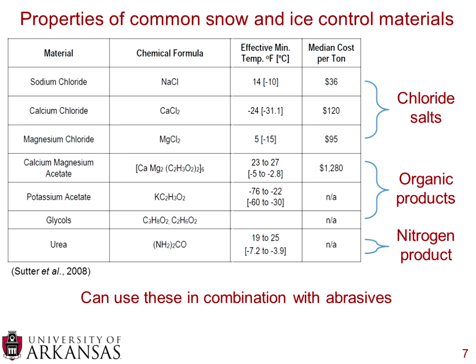Here are common snow and ice control materials. The top three are chloride-type salts: sodium chloride, calcium chloride, and magnesium chloride. Sodium chloride reduces the freezing point to 14°F; calcium chloride to −24°F; and magnesium chloride to 5°F. Cost per ton (from 2008 data) is higher for calcium chloride, which provides the lowest effective temperature. The lower you want to drop the freezing point, the more expensive the material.